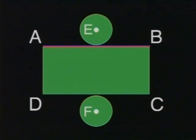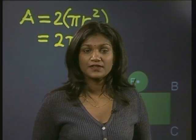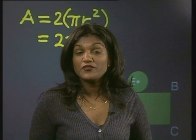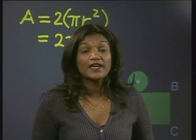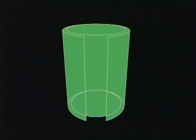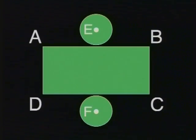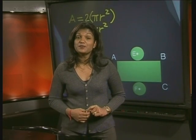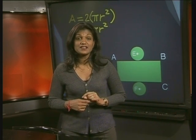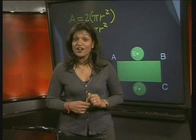Look carefully at base AB. Can you find this length somehow? Let me give you a hint — I am going to show you the animation of making the net again. Look carefully at how the bases are attached to the circle. Did you see that the bases fit perfectly around the circles? So, base AB is actually the same as the circumference of the circle.